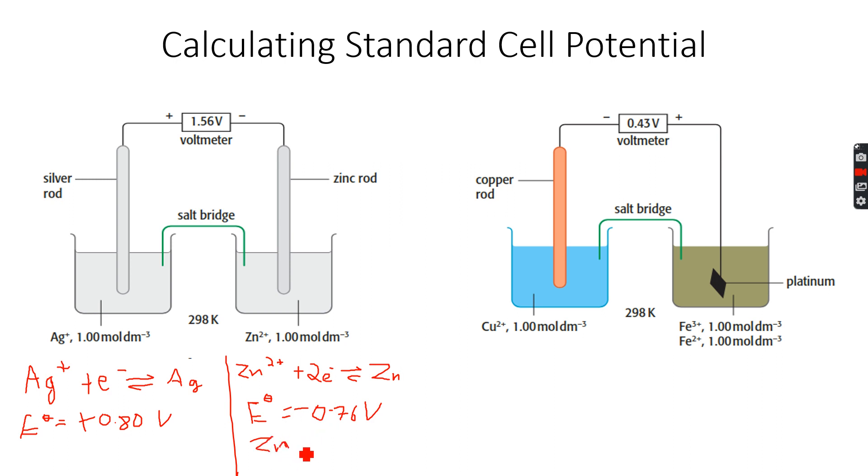Which is Zn²⁺ plus 2e⁻, and this becomes 0.76. Because now that we have inverted, the sign will also invert—this will become plus 0.76. Then we add these two together: 0.80 plus 0.76 will give us 1.56 volts, and this is the value that you can see over here. Obviously, since zinc is negative, it becomes the negative electrode because it has a lower E° value.